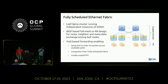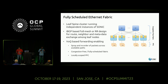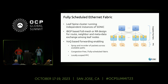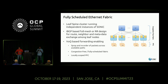DSF — Distributed Scheduled Fabric — is a technology intended to create a lossless fabric by scheduling traffic between two endpoints, maximizing the efficiency of the network infrastructure and the utilization of the endpoint processing power. The endpoints could be GPUs, CPUs, NICs, or other forms of servers.